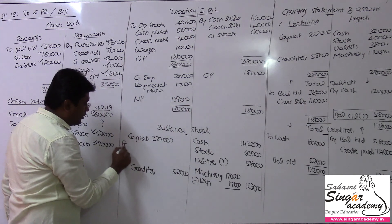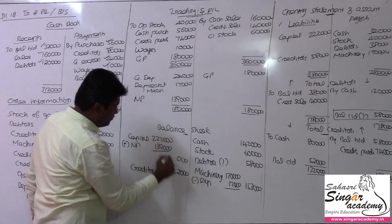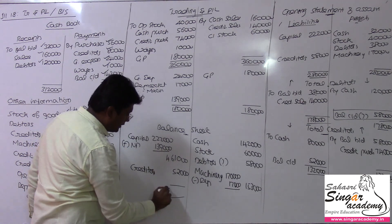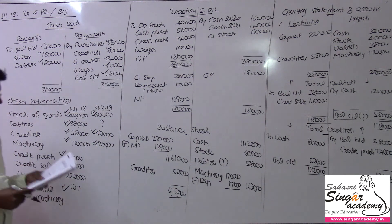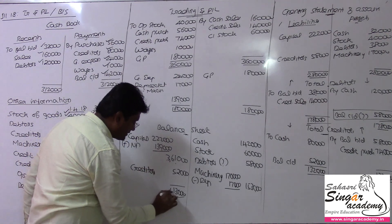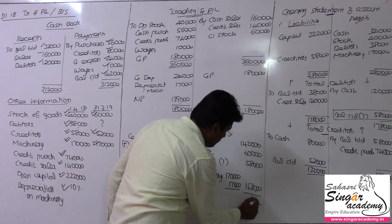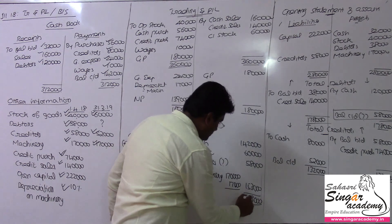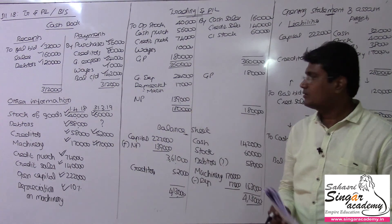Adding net profit of 1,39,000 to the capital side, the balance sheet total comes to 4,13,000 rupees. Verifying the assets side: 3,000 plus various figures — 5, 10, 16, 21 — also totals 4,13,000 rupees. The balance sheet tallies. We got the answers — please copy this down.